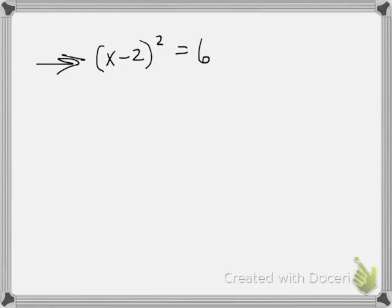The first step we're going to do is to square root both sides. When I square root both sides, I have to stick a plus or minus in front of the square root of 6.